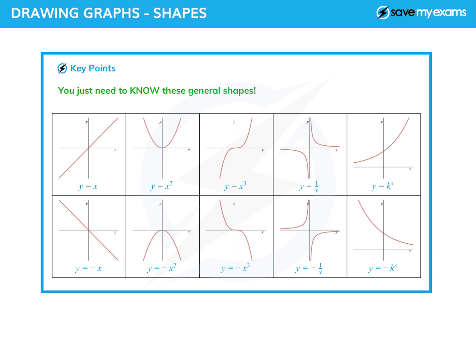You should know the line y equals x - there it is, it goes up 45 degrees from left to right. And y equals minus x goes down at 45 degrees from left to right, and it is in fact a reflection in the x-axis if you remember your transformations.